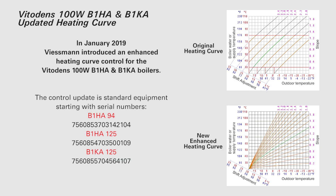In January of 2019, Wiesman introduced a software update to the VitaDens 100, B1HA, and B1KA boilers. This software update provides enhanced heating curve adjustments. This video will explain the enhanced features and give possible settings for some system examples.